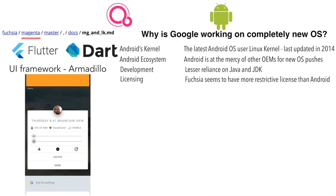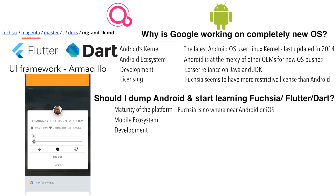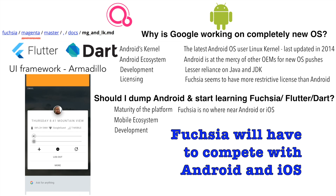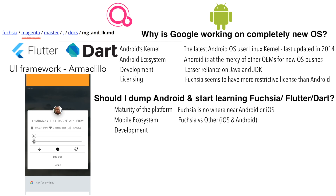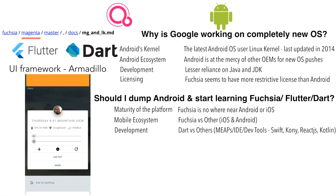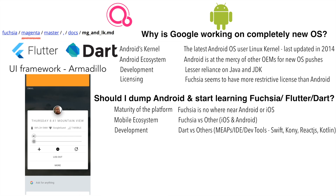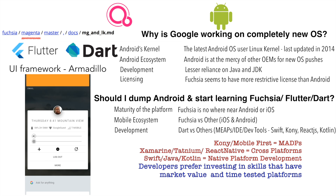That's all okay, but as an Android or mobile developer, what should I do? Should I just dump Android and start learning a new operating system, SDK, and programming language? Well, there are three ways of looking at it. One is the maturity of the platform — Fuchsia is nowhere near the maturity of Android or iOS, and even Android took quite some time to become as mature as it is now. The second aspect is that Android and iOS have a huge mobile ecosystem. Nowadays you don't buy just a mobile phone — you get hooked into the whole ecosystem of apps, app stores, and all other services available through your mobile phone. Fuchsia doesn't have that yet. And when it comes to development, Dart is a completely new programming language that has not gained much traction, and there are many other cross-platform frameworks that are more popular in the market.